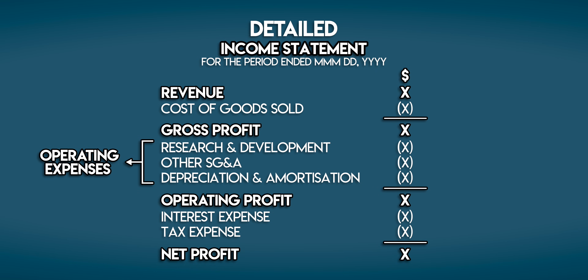So where can you find EBIT and EBITDA on financial statements? They both live in the income statement. This is the financial statement which summarizes a business's revenues and expenses over a period of time. Revenue less expenses is profit, and like I mentioned, EBIT and EBITDA are both measures of profitability.